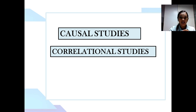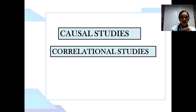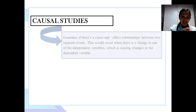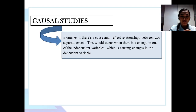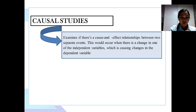So let us talk about causal studies. Causal studies examine if there is a cause-and-effect relationship between two separate events. This would occur when there is a change in one of the independent variables which is causing changes in the dependent variable.